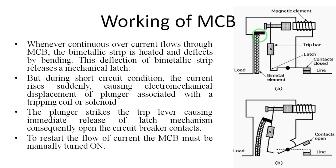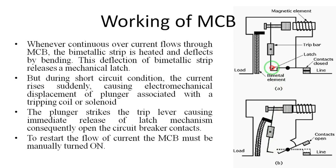When the bimetallic strip bends, it strikes a lever. The bimetallic strip has a plunger — this black-shaded part is called the plunger. When the plunger strikes the trip lever, because of the overcurrent causing bending, it releases the latch. You can observe here: this is the latch — it will release the latch immediately.